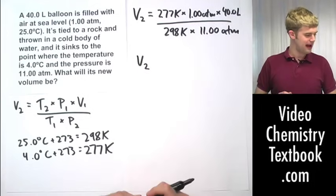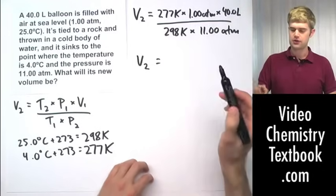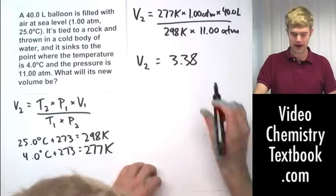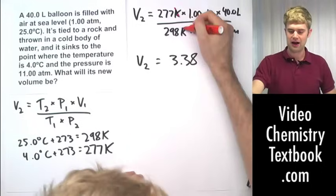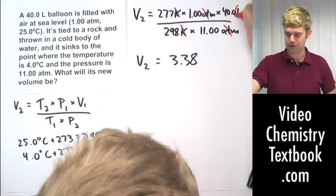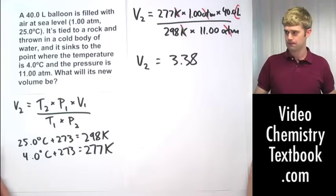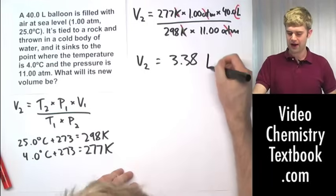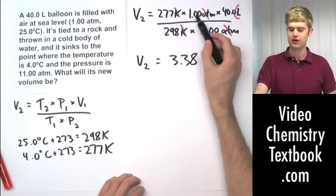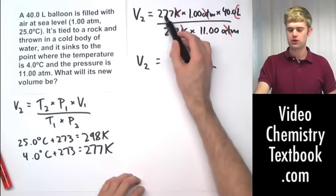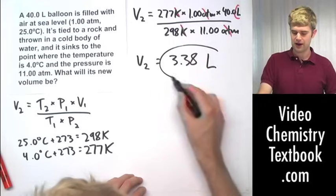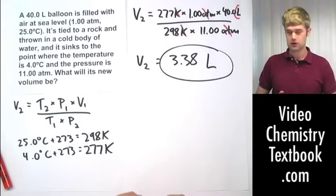So I'm going to do that math and my final answer, rounded to three significant figures, is going to be 3.38. Now what are my units here? Kelvin over Kelvin, those cancel out. ATMs over ATMs cancel out and I'm left with liters here. So my final answer is going to be 3.38 liters. That's rounded to three significant figures because three significant figures are the lowest number of significant figures that I have in my answer.